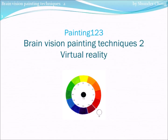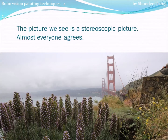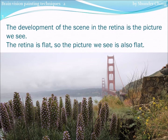Brain Vision Painting Techniques 2. Virtual Reality. The picture we see is a stereoscopic picture. Almost everyone agrees that the development of the scene in the retina is the picture we see.